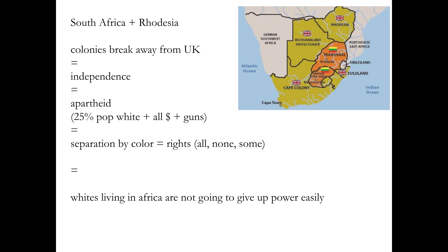What all this says is: whites living in Africa are not going to give up power easily. If they're going to put this much effort into defining people by the size of one's nose or the color gradient of one's face, they are not giving up power easily. Rhodesia is going to exist until 1980. White-led apartheid in South Africa is going to exist until around 1992–93. So we'll talk about them later, but the point is: no, the whites in South Africa and Rhodesia are not giving up easily — and that is going to mean violence.